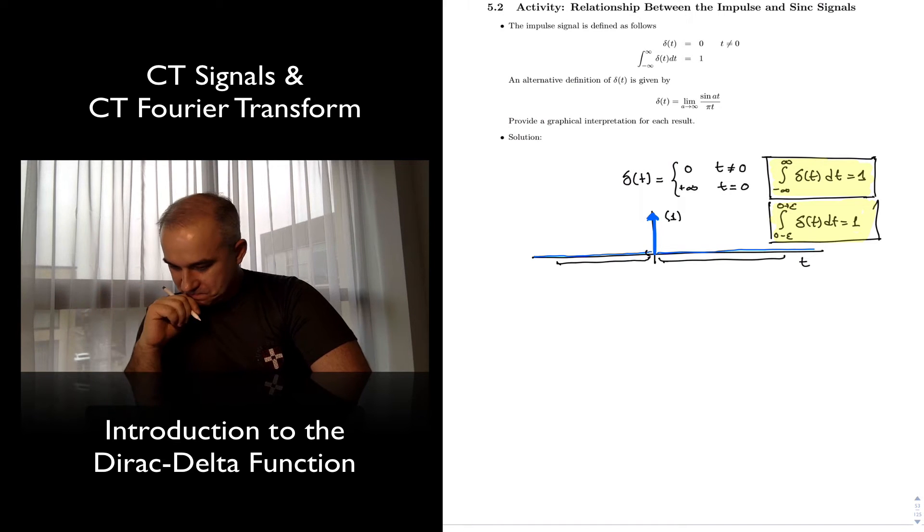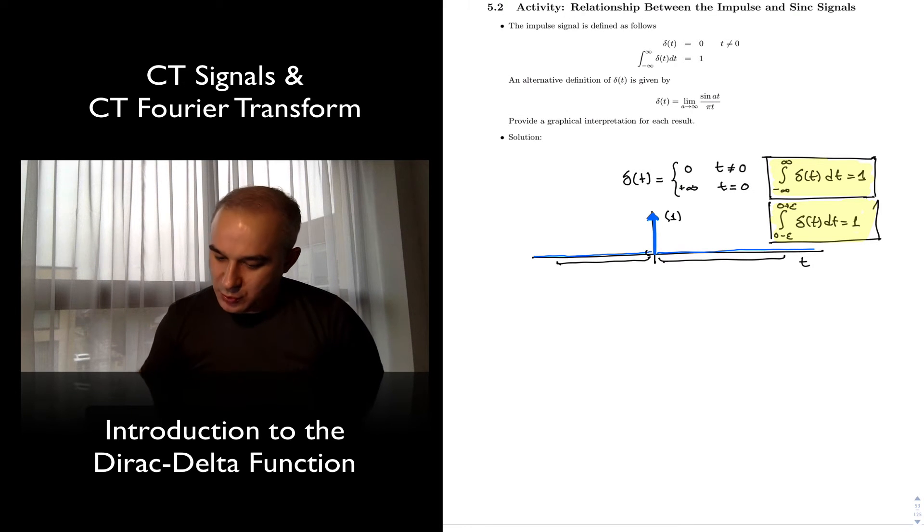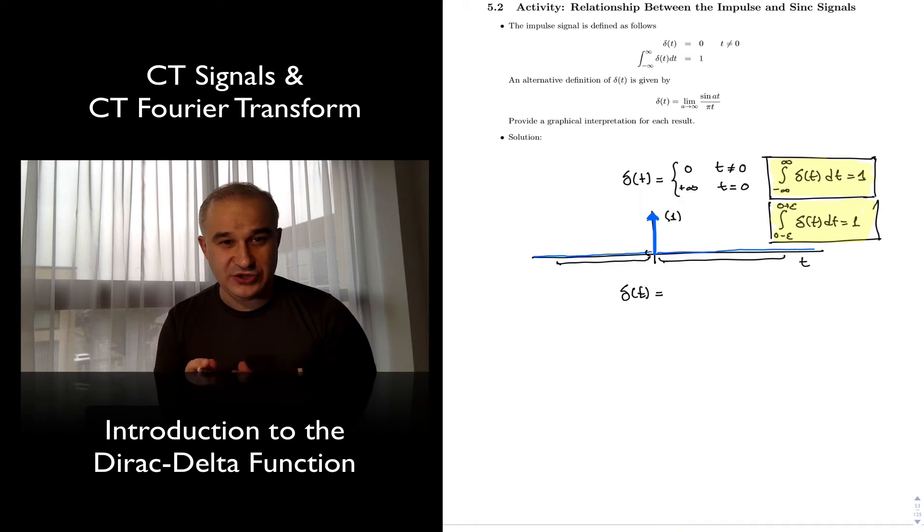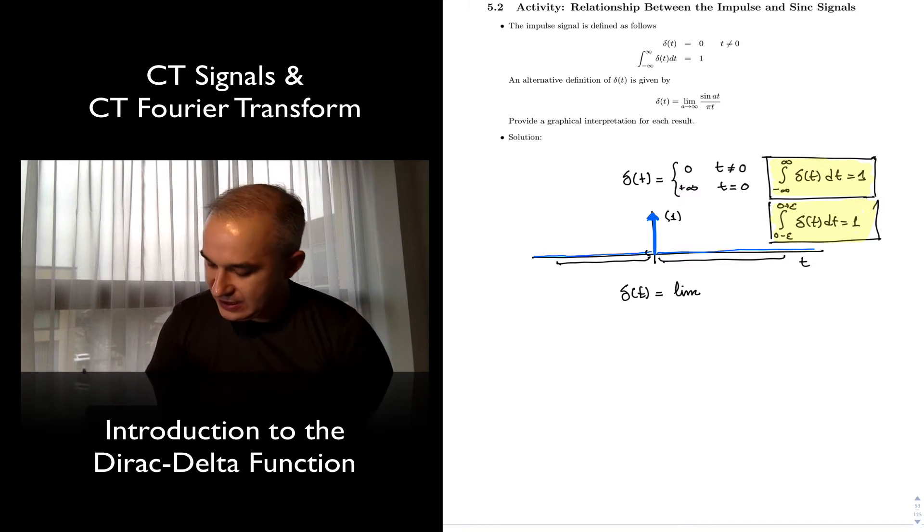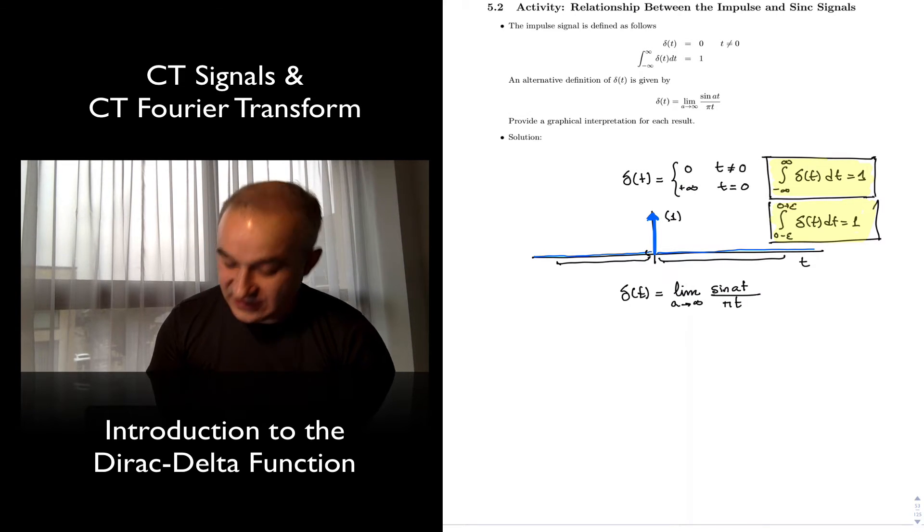So with that, we can define also the impulse function as a limit, and this is what we have here. The delta function, and there are a few limit definitions of the delta function, one of them that is useful in digital signal processing, is that this is the limit of sin of at divided by pi t, as a approaches infinity.